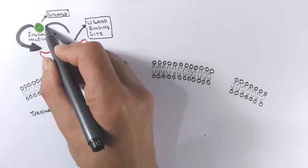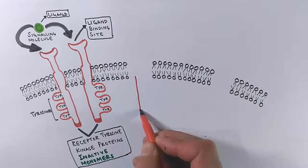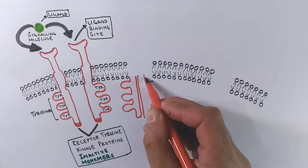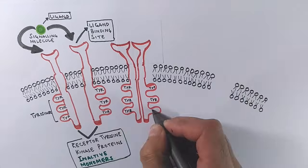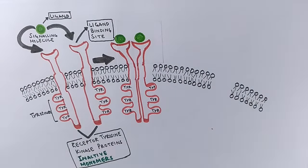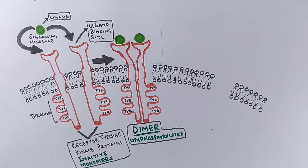In the next step, the binding of a signaling molecule such as a growth factor causes two receptor monomers to associate closely with each other, forming a complex known as a dimer in a process called dimerization. But dimerization does not fully activate the receptor molecule.